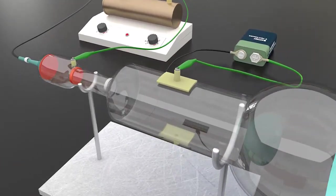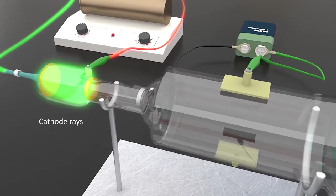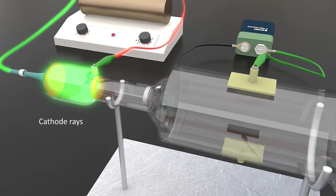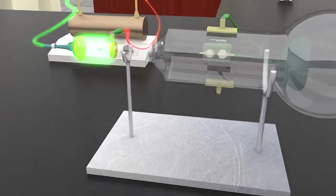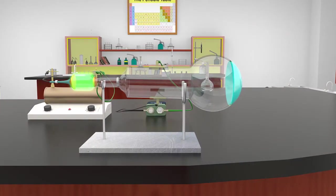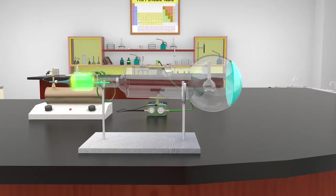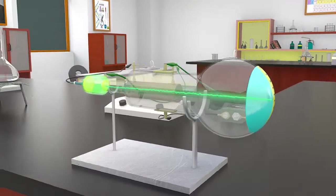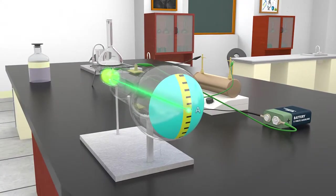At high voltage and low pressure, cathode rays were produced in the cathode ray tube. In the absence of electric and magnetic fields, the cathode rays produced were found to travel in a straight line without any deflection, and struck the tube at point A.